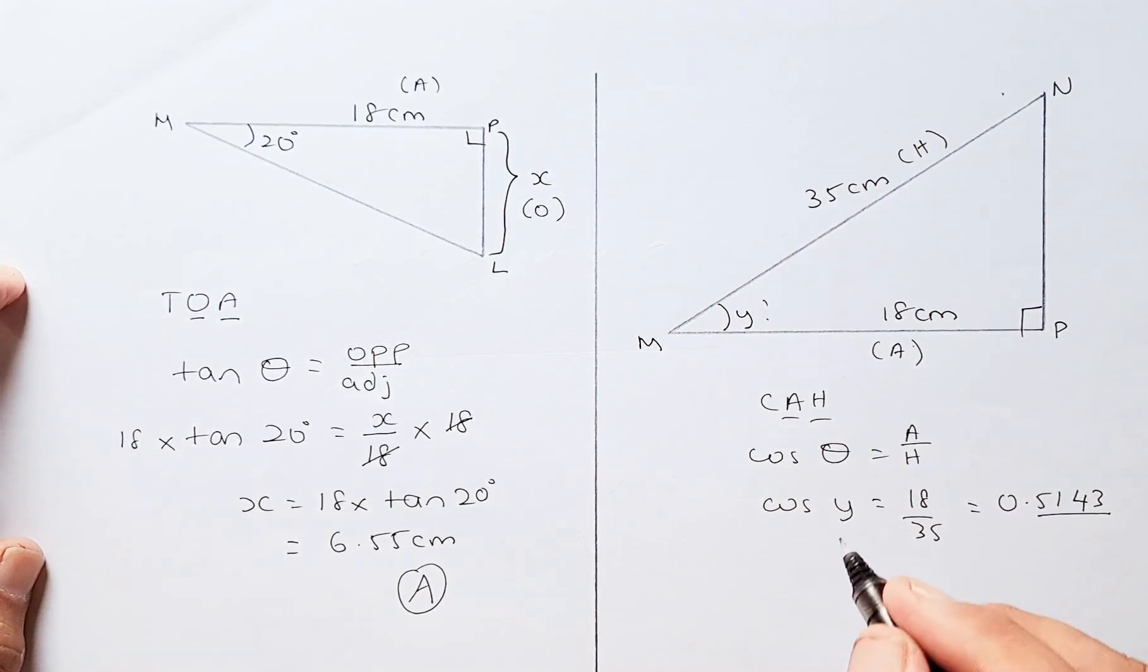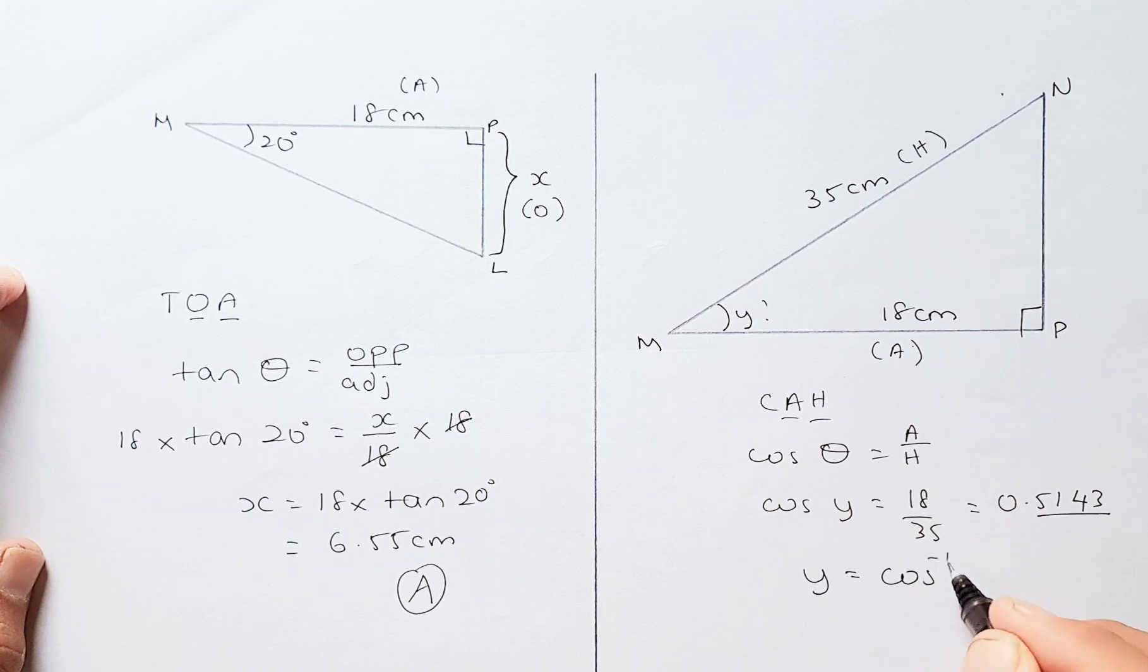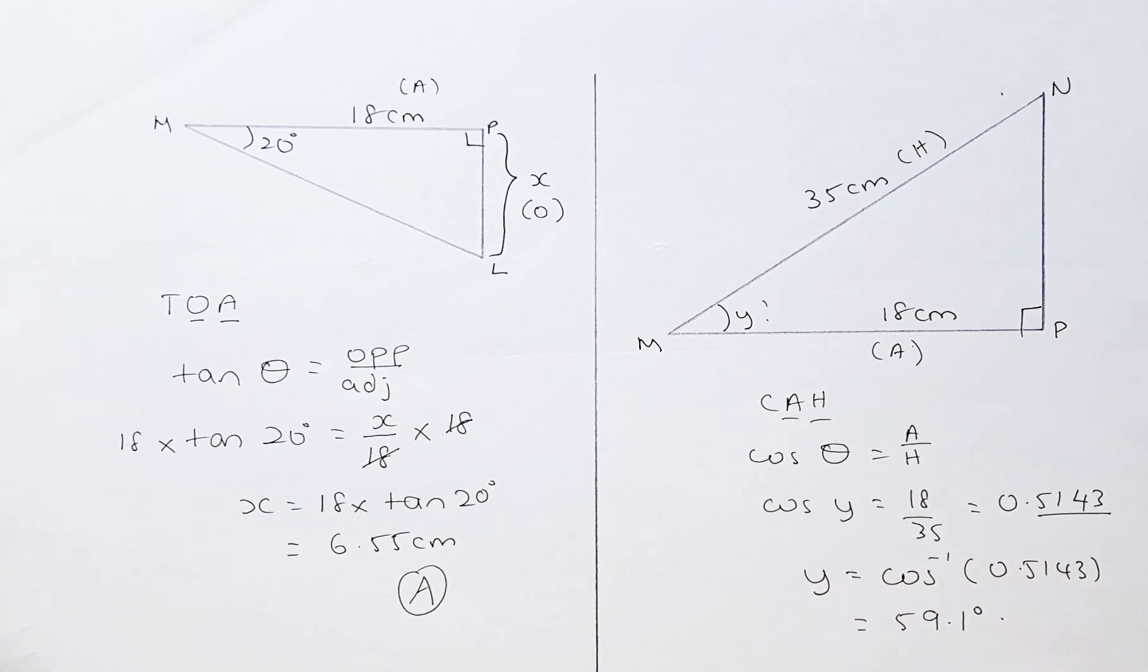if you have cos Y to find your Y, you need cos inverse of that number. To find the cos inverse, you put the shift button in your calculator, shift of cosine, and on top you can see the cos inverse function. Put in your calculator, and the answer will turn out to be 59.1 degrees. I suggest you round to 1 decimal place. Hope you understand trig ratio, and see you soon!